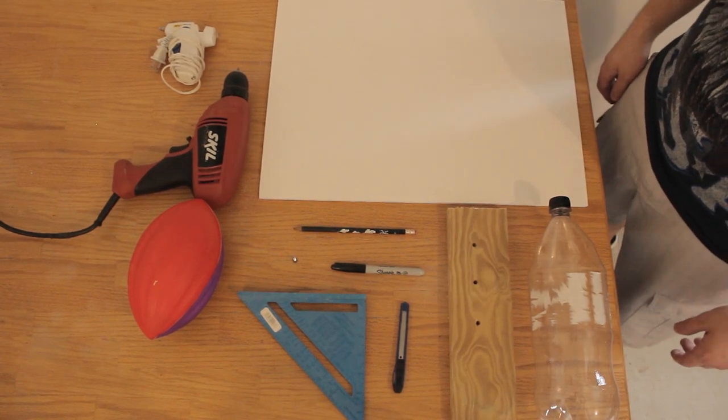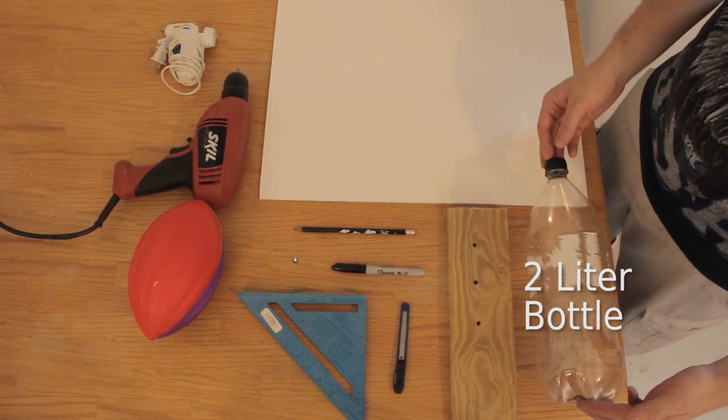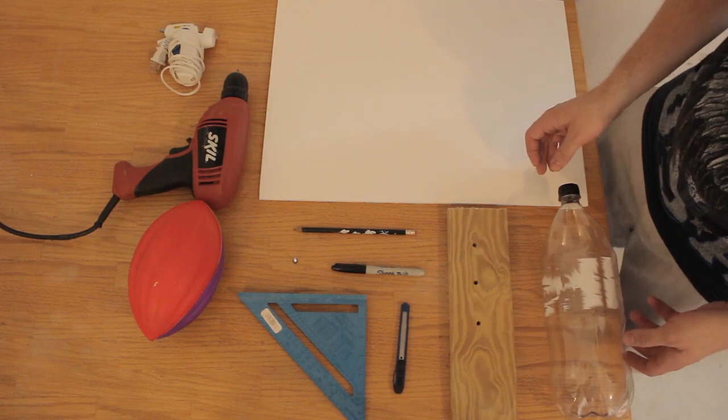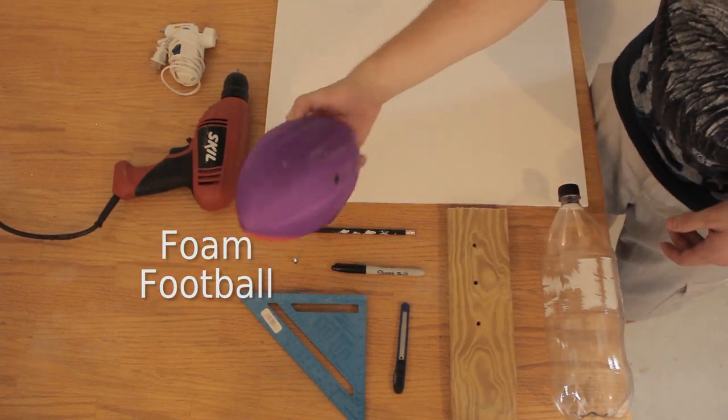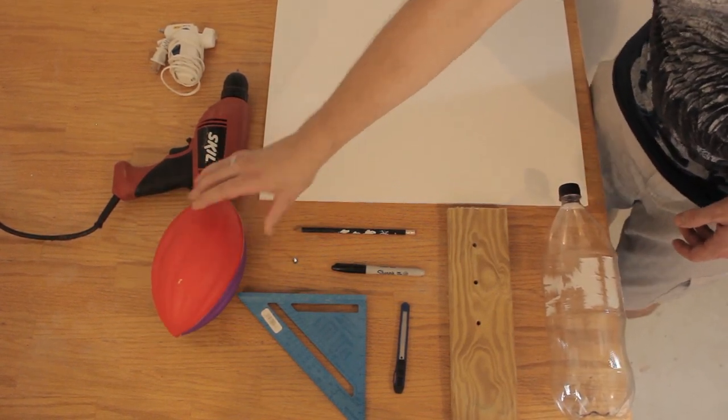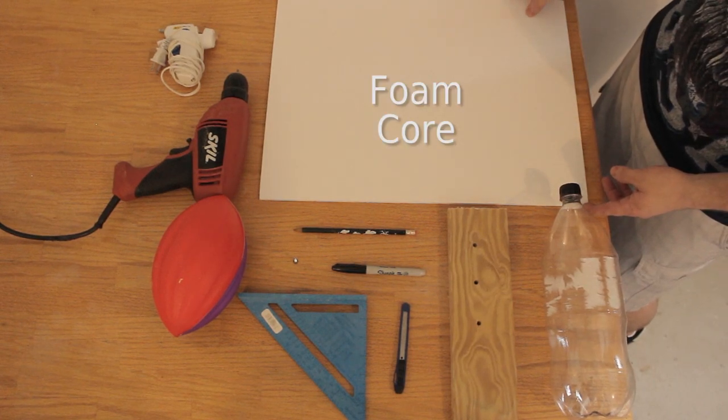In order to build your two liter bottle rocket you're obviously going to need a two liter bottle of your favorite soda. We're going to need a foam football for the nose cone and some foam core to make the fins.